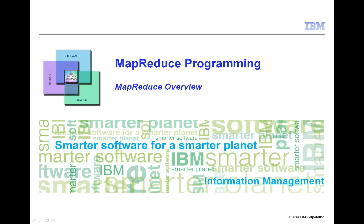MapReduce is a programming model for processing large data sets with a parallel distributed algorithm on a cluster. In our case, the Hadoop Distributed File System (HDFS) is used, and this provides a cluster of commodity quality data nodes over which the blocks of the files are distributed.